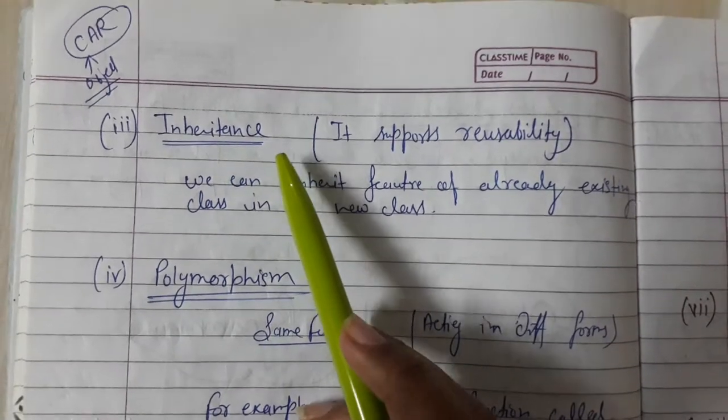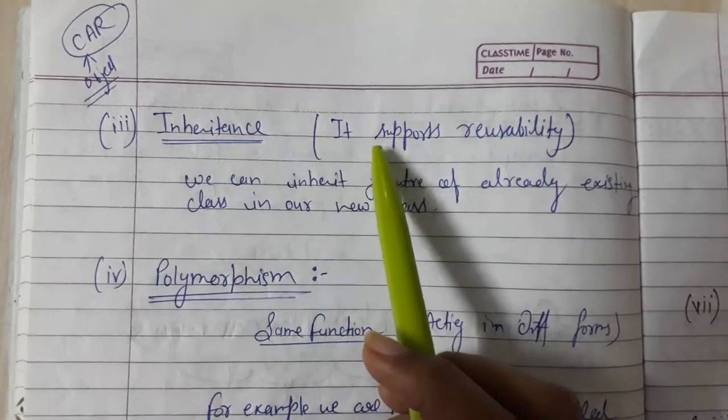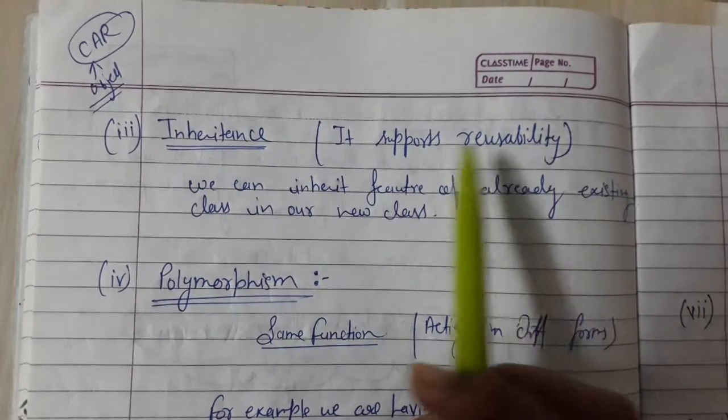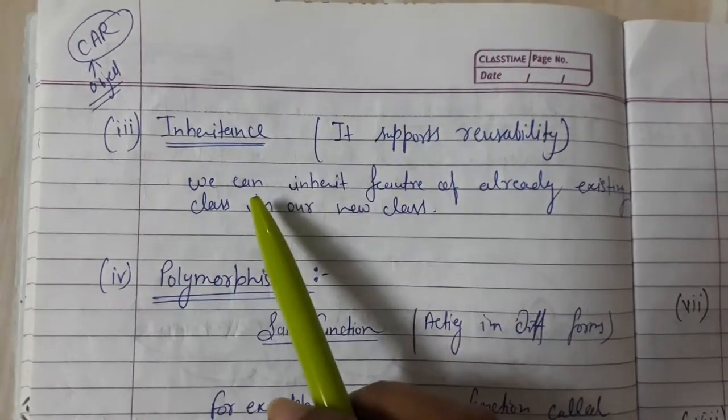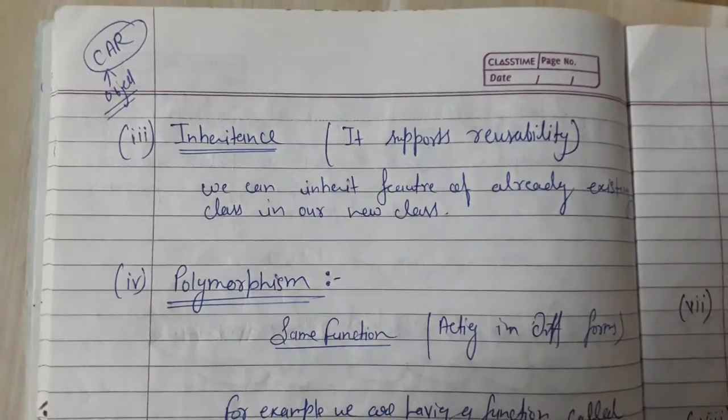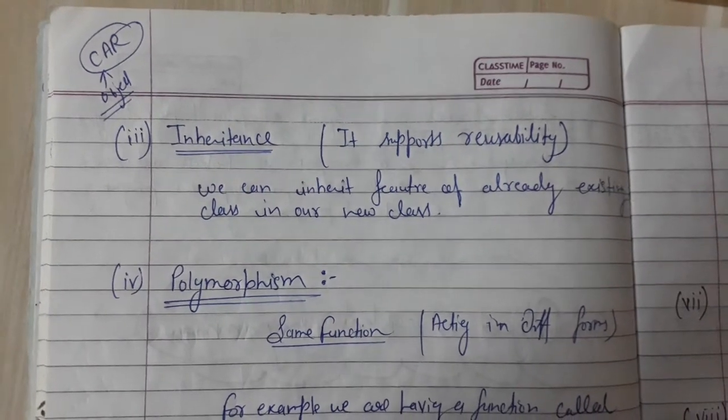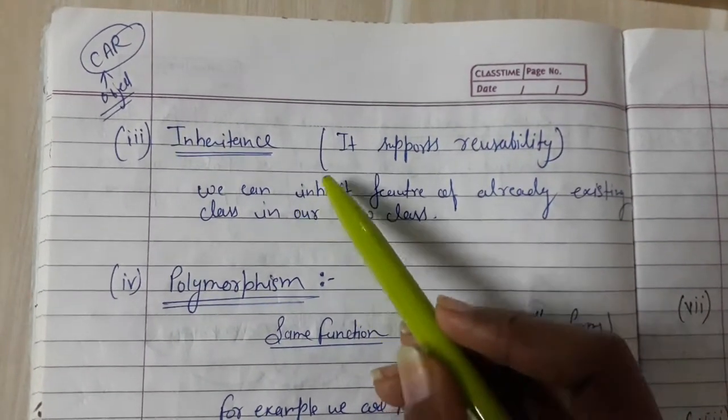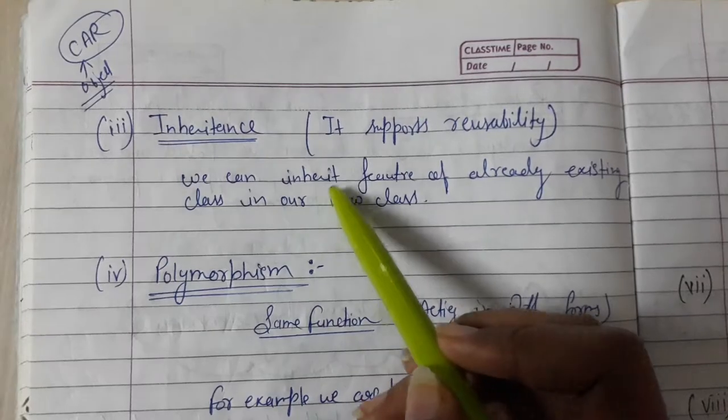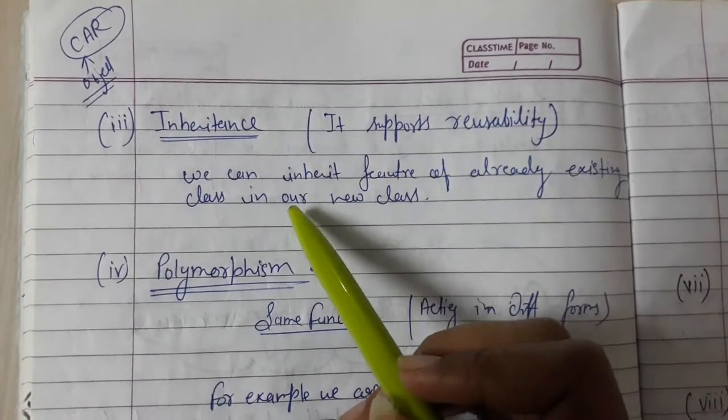Inheritance basically supports reusability, means that we can inherit features of an already existing class in our new generated class. We can inherit the features of an already existing class in our new class.